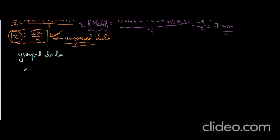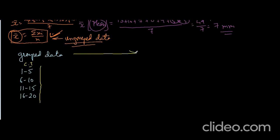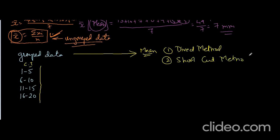You must know what grouped data means — a particular group is given. So 1 to 5 is a group, 6 to 10 is a group, 11 to 15 is a group, 16 to 20 is a group. These are nothing but class intervals. For grouped data, there are three methods for finding out the mean: number one, direct method; number two, shortcut method; number three, step deviation method.